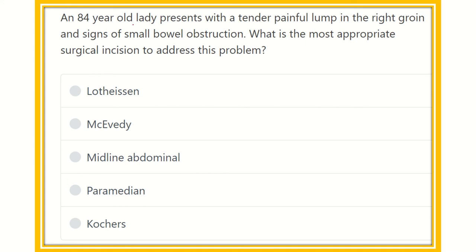An 84-year-old lady presents with a tender painful lump in the right groin - this point is important for the incision. The painful lump is present in the right groin with signs of small bowel obstruction. What is the appropriate incision to use here?